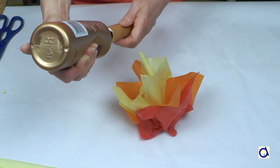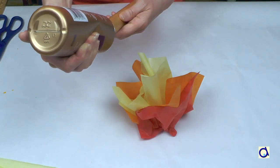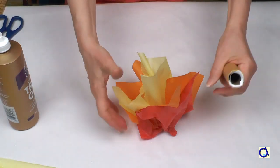Put white glue on top of the tube and insert the center of the tissue paper flame in the tube. Let dry.